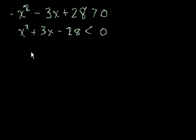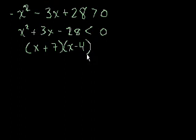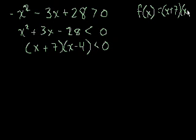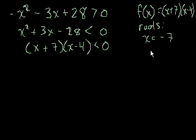And if we factor this, we get (x + 7)(x - 4) < 0. So if this was equal to 0, we would know the two roots of this function. Let's define the function as f(x) = (x + 7)(x - 4). That's f(x), right? Well, after factoring it, we know the roots are x = -7 and x = 4.